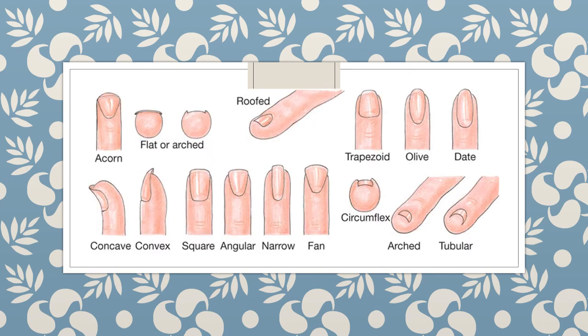Did you know that middle fingernails grow fastest, thumbnails grow the slowest, and toenails grow slower than fingernails? Nails are not shed automatically like hair.